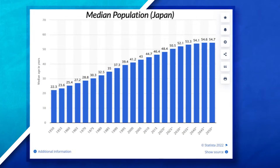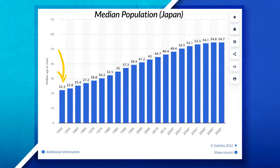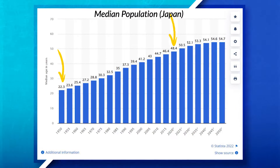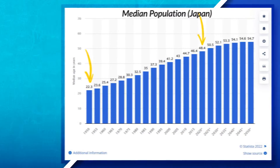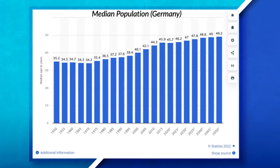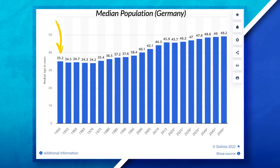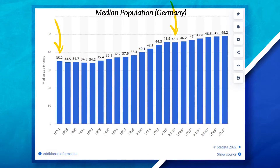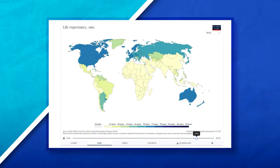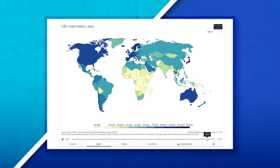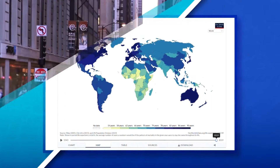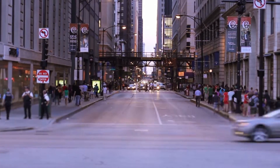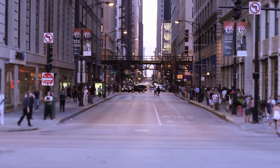And it isn't just the United States. In 1950, the median age in Japan was around 22.3 years old, and in 2020 it was around 48.4 years old. In 1950, the median age in Germany was around 35.2, and in 2020 it was around 45.7 years old. We can see that developed countries around the world are seeing their populations get older, and this change is causing countries to shift their political and economic policies to adapt.